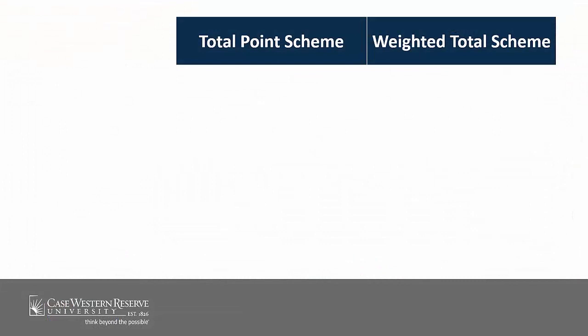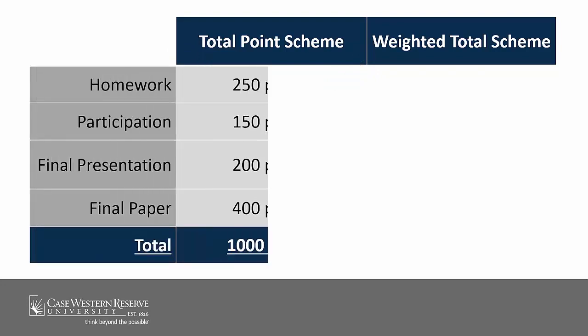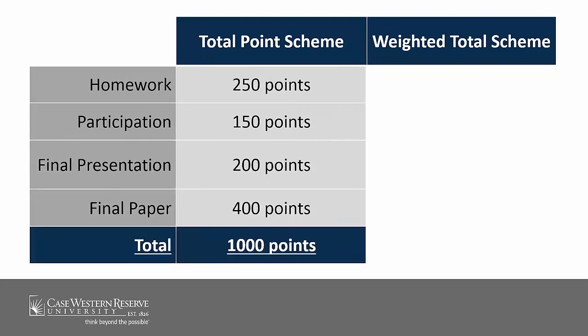There are two main methods to setting things up when using the Grade Center: Total Points courses and Weighted Total courses. You'll need to examine your syllabus and course structure to decide which one works best for you. Total Points courses are set up where each item has a point value, and the final grade is determined by adding all of those points and dividing them by the total points available. This is the simplest form of calculating a grade in Blackboard.